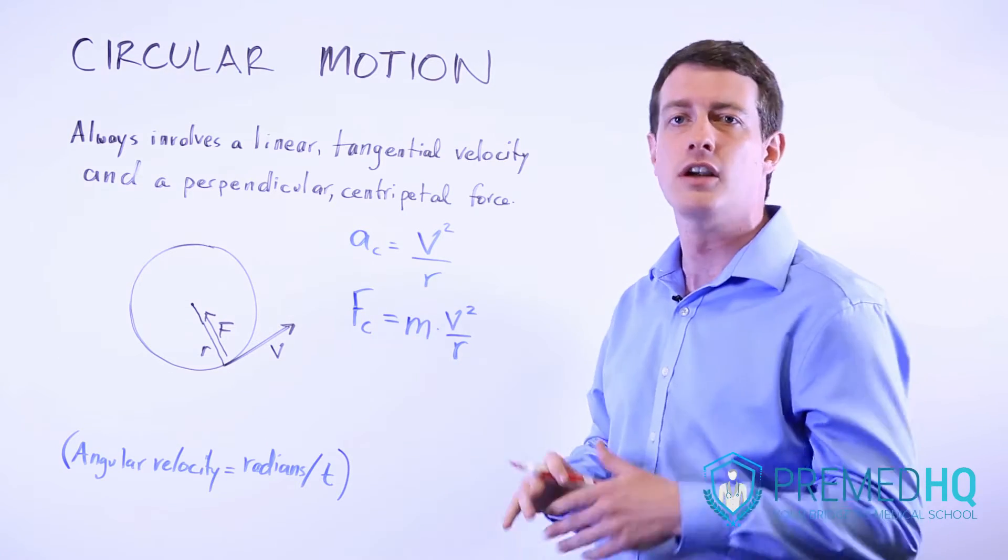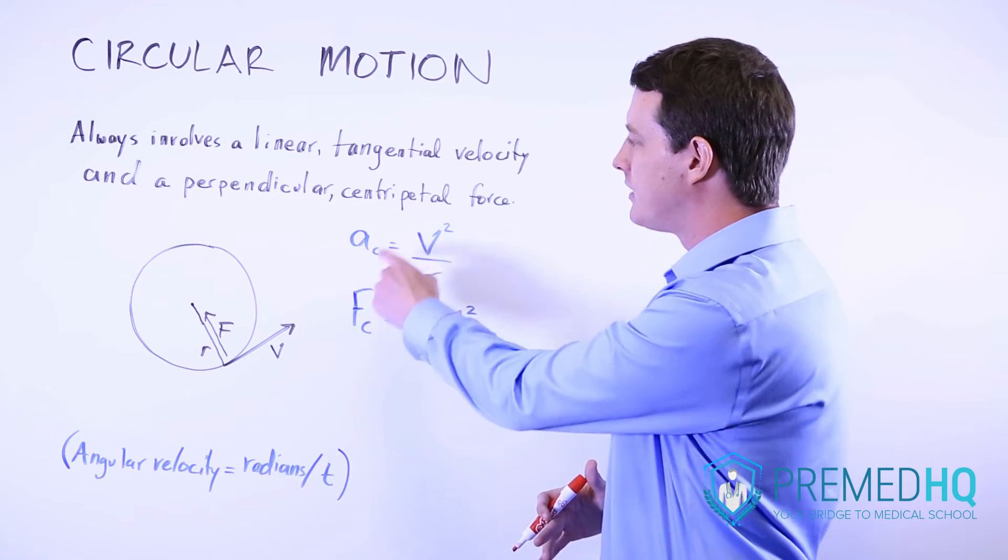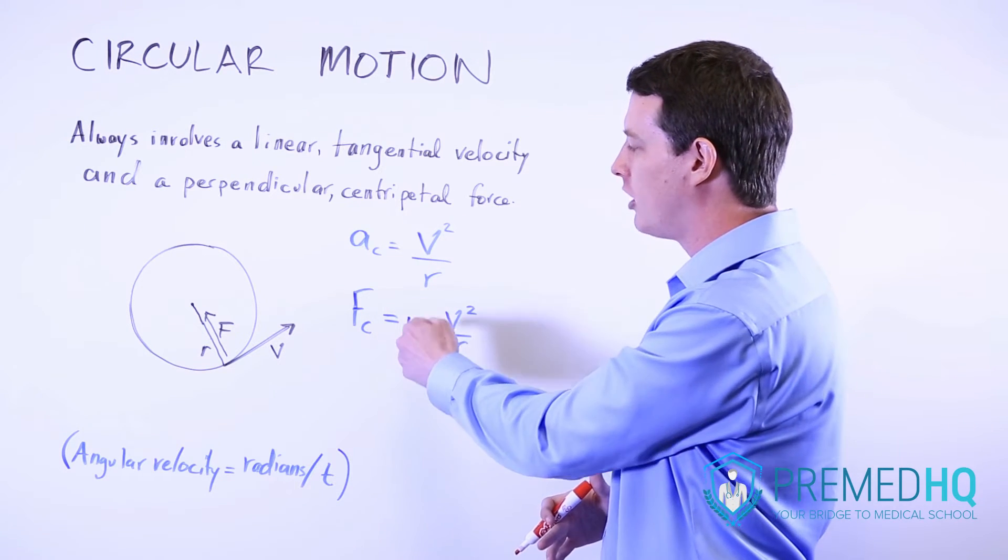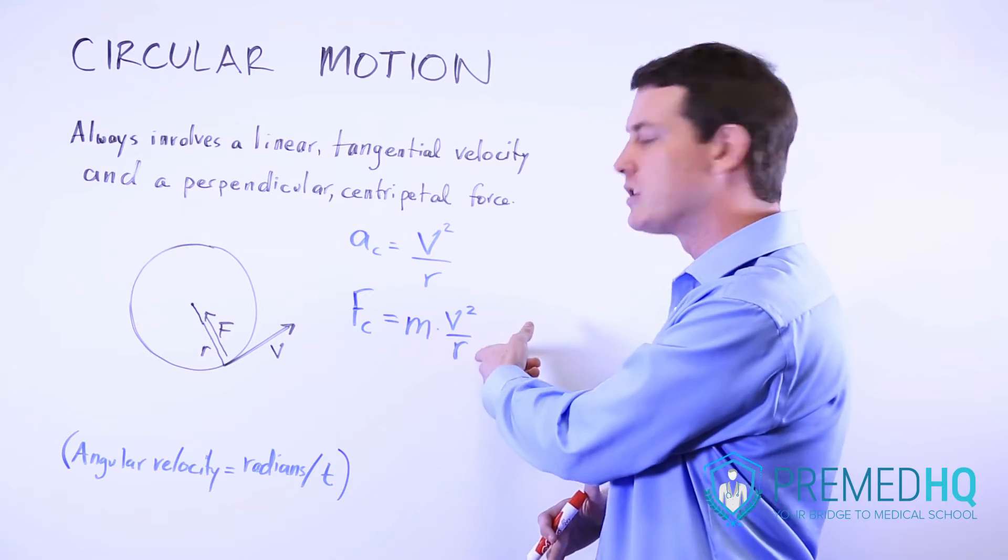Notice that this is just another force equals mass times acceleration. But because the acceleration is v squared over r, we express the centripetal force as mass times v squared over r.